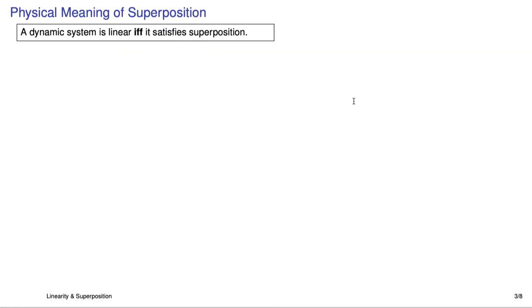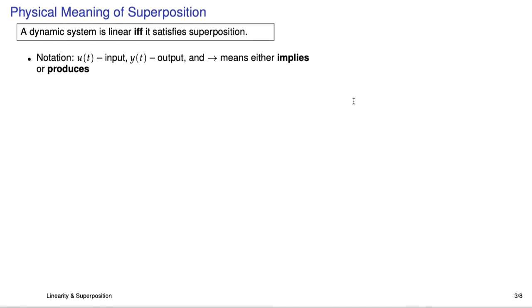It all boils down to this. A dynamic system is linear if and only if it satisfies superposition. The IFF is the if and only if thing. That's it. And to understand what superposition is, to play around with it, we have to define a little bit of notation. I'm going to use U for inputs, Y for outputs, and I'll use the little right arrow to either mean implies or produces. And you'll see what I mean in just a minute.